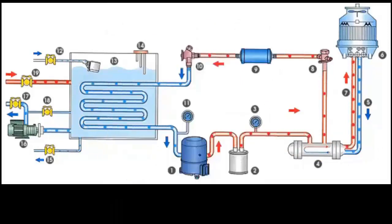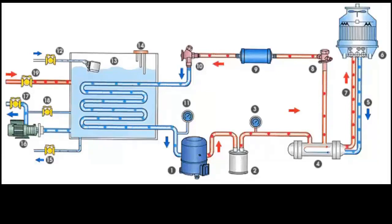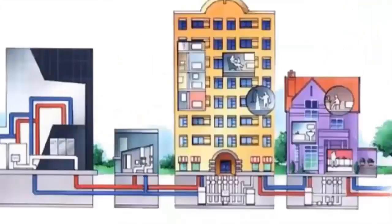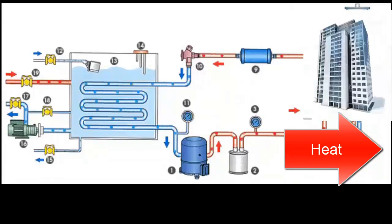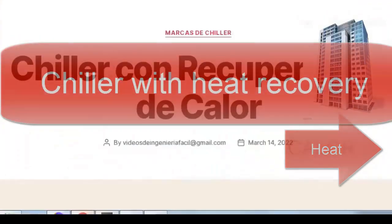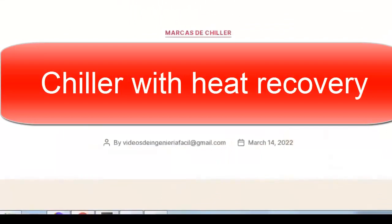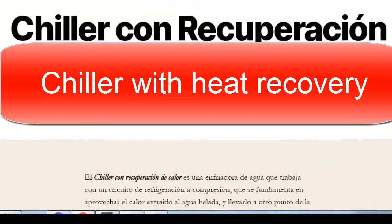Let's imagine we are in a building. The building has offices with air conditioning where people need cooling, but it also has bathrooms where hot water is needed for showers. In the past, all this was managed by a boiler system — and in many cases still is. But what if we take advantage of the heat already present in the condenser, and instead of throwing it into the environment, we redirect it into the hot water circuit of the building?